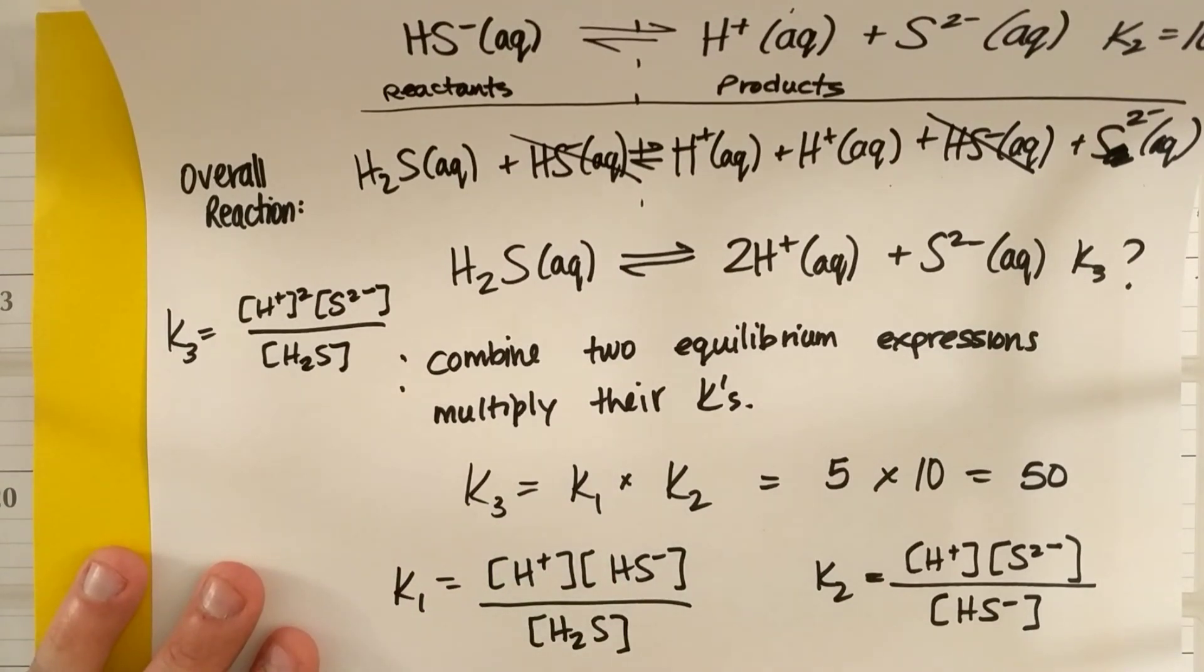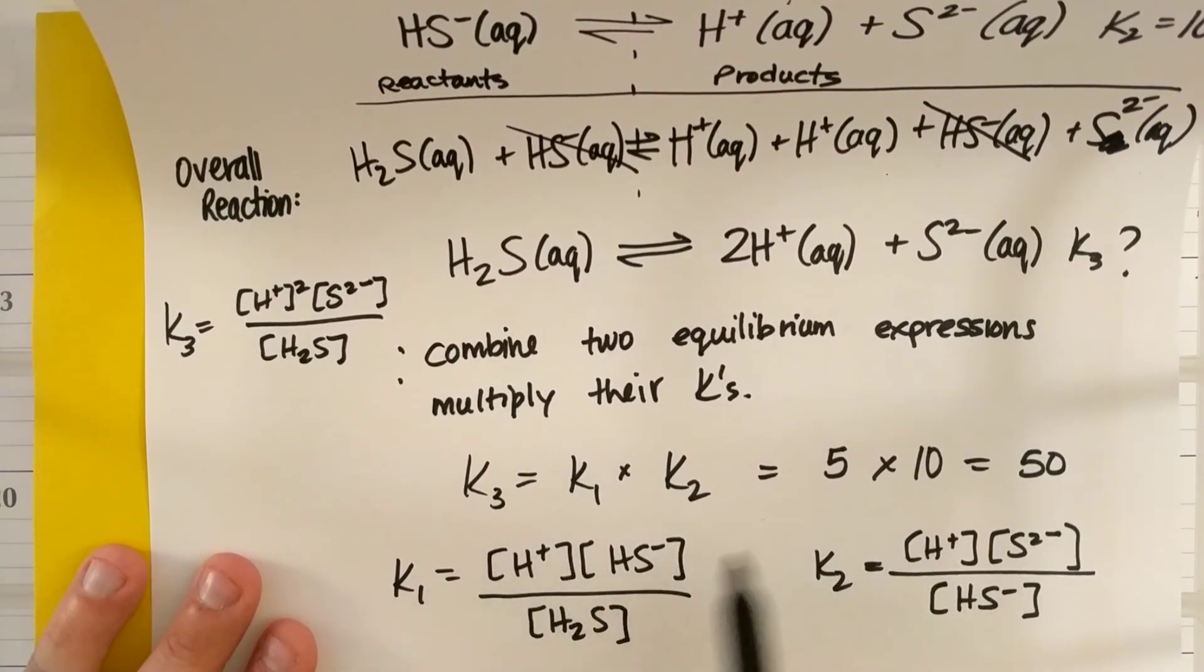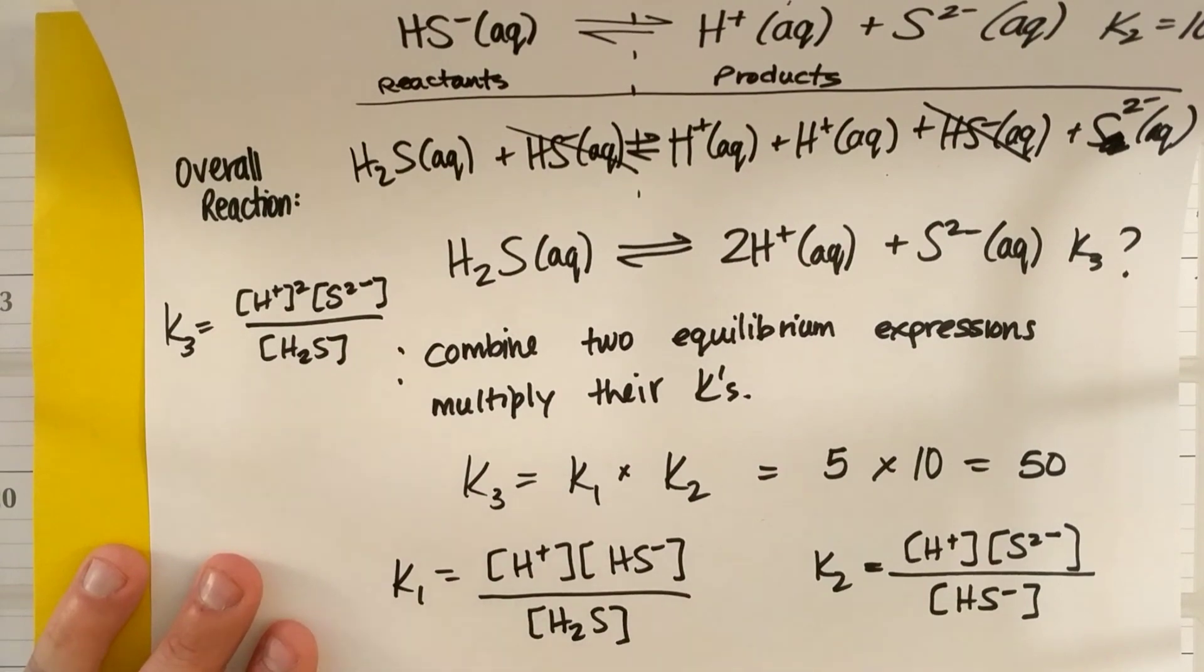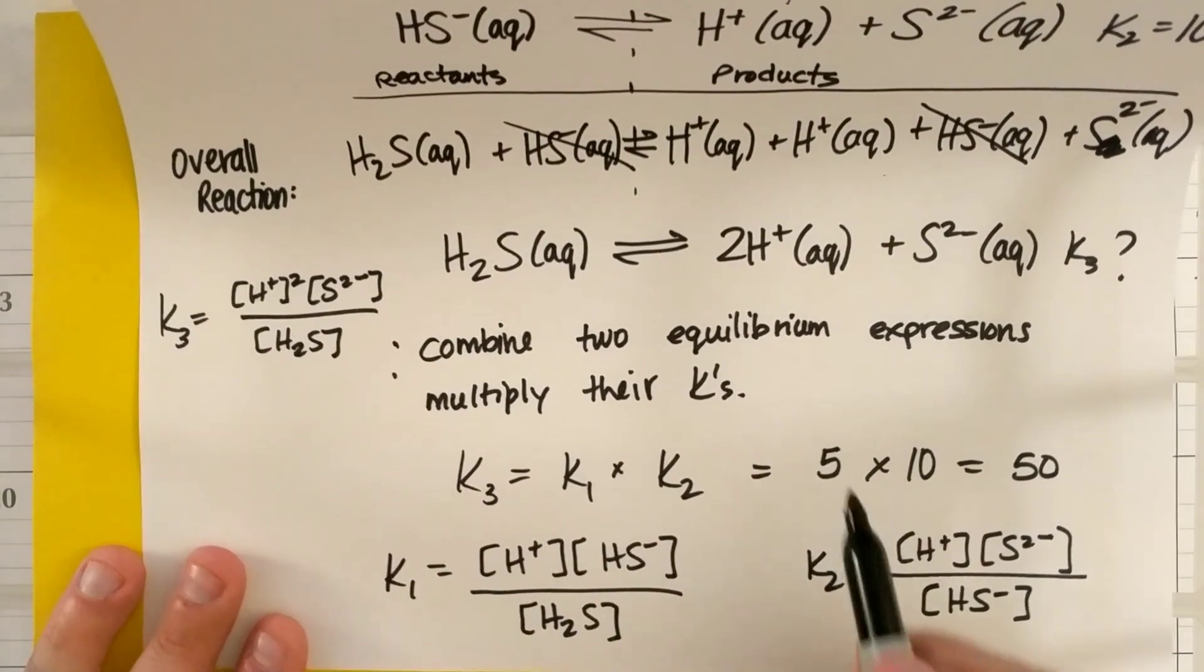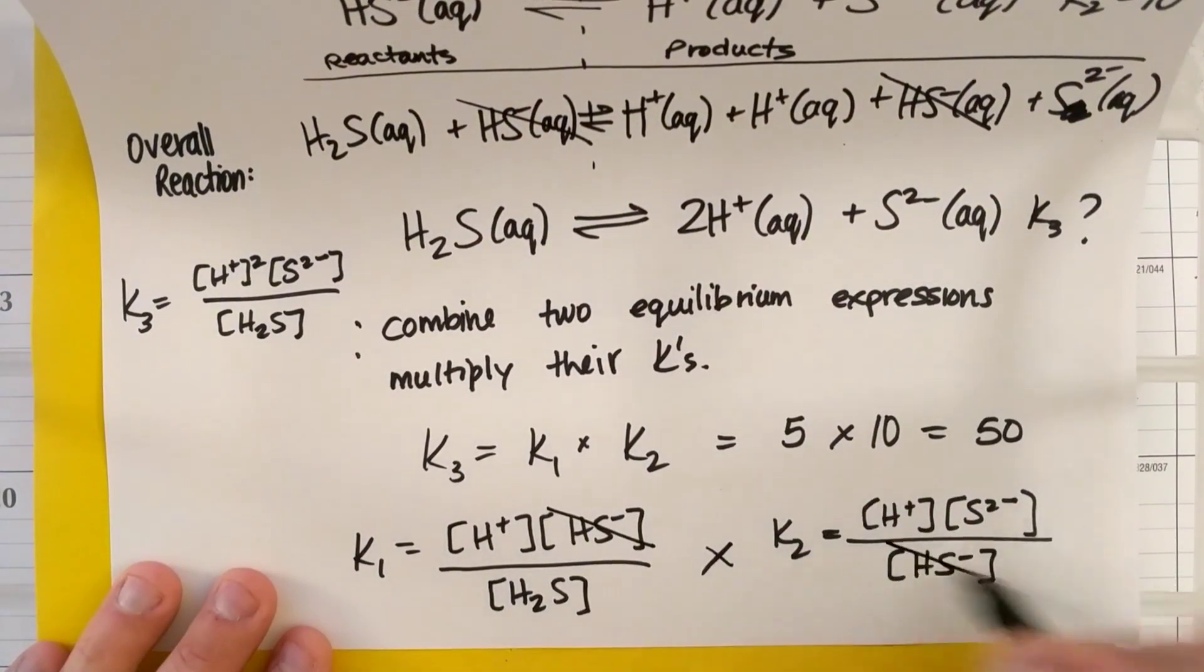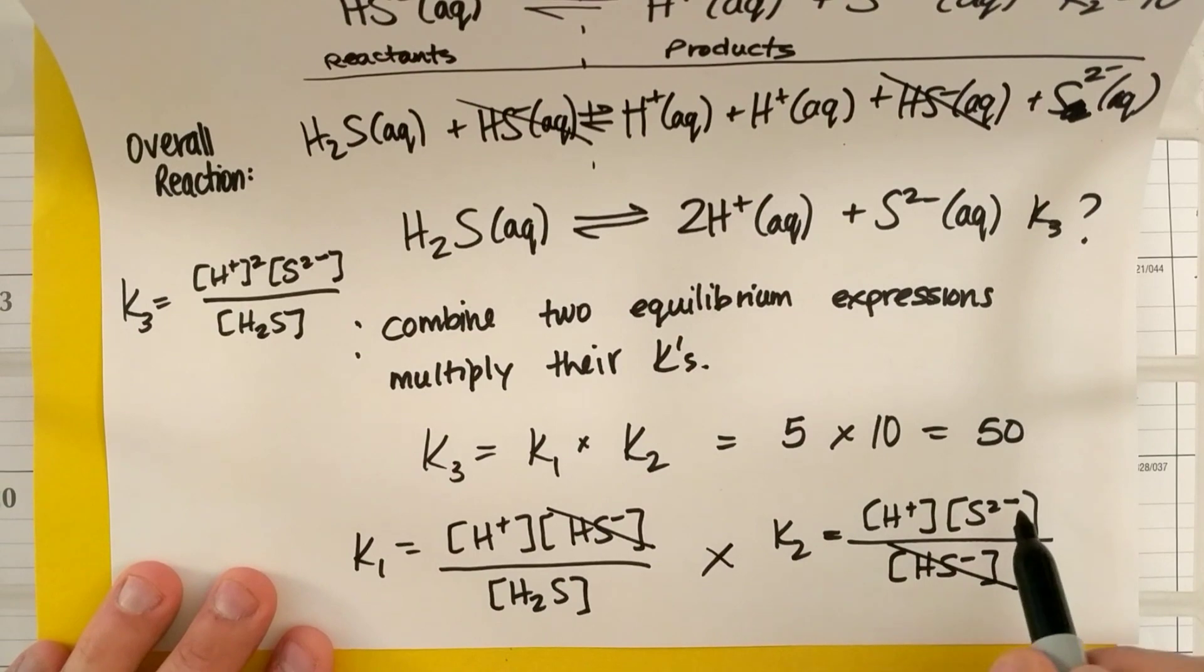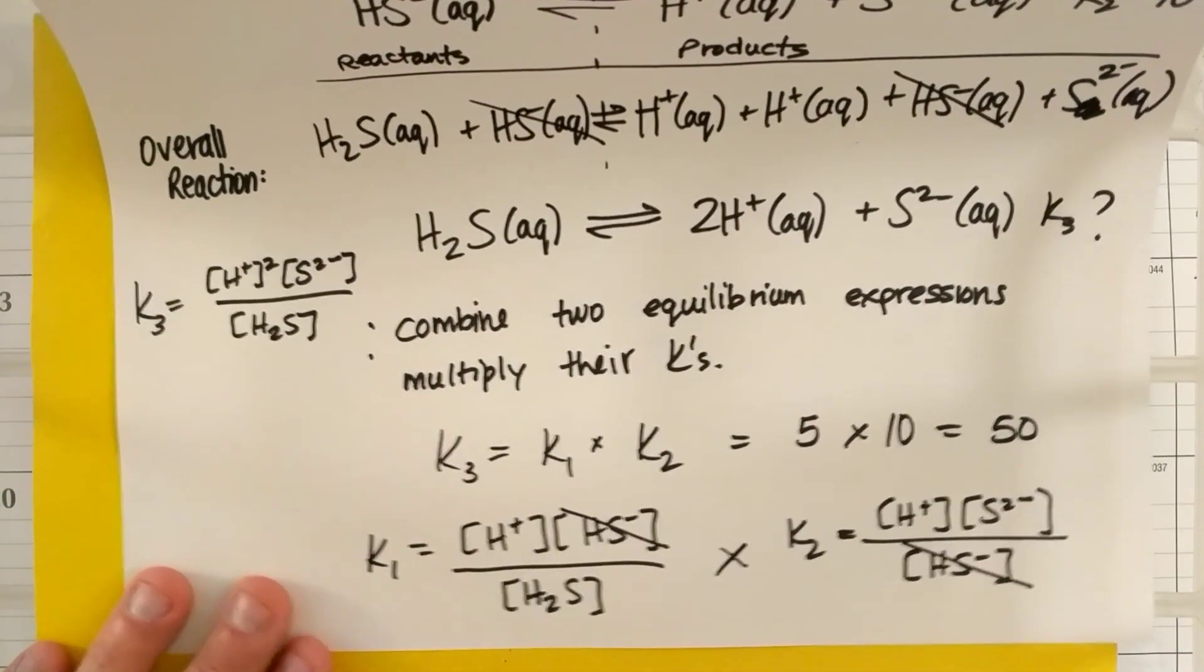Well, if you understand algebra to a great extent, if I multiply both these together, my HS will combine, my HS's will cancel out, and my S2 minus will remain there with my H2S on the bottom. So if I multiply these two expressions together, I'll have these HS's cancel out, and I'll have to combine H plus, H plus, S2 minus, all over H2S.